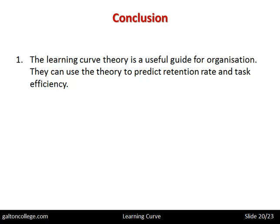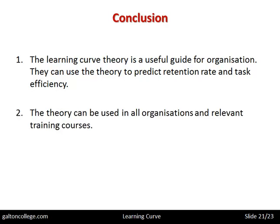Performing one task over and over is not conducive to a good working life. The theory can be used in all organizations and relevant training courses. It's possible for us to acquire skills by performing a particular task over and over. That's how we learned at school — we learned to write by repetitively making letters, using a pen and paper and writing it down over and over. And when we mastered it, we were praised by the teacher, so we had a reward.